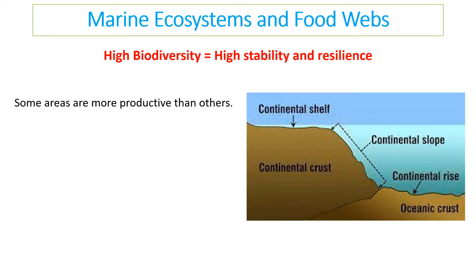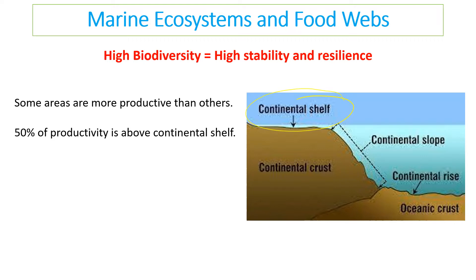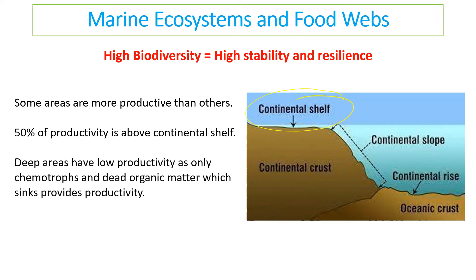Some areas in the sea are more productive than others, and this map pretty much shows you the key areas you need to know. About 50% of productivity in the sea is done above the continental shelf, but deep areas have lower productivity because there is no light there. Therefore, these areas only rely on chemoautotrophs, which use chemical energy from deep sea vents to produce biomass, giving very low productivity.